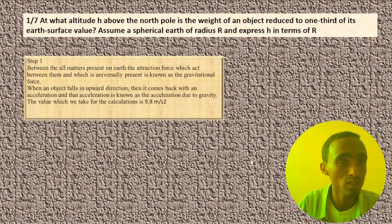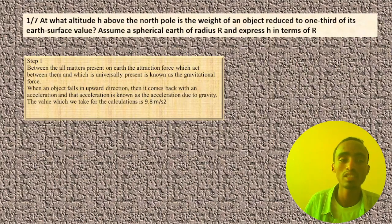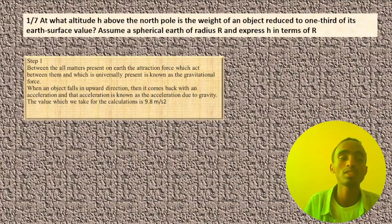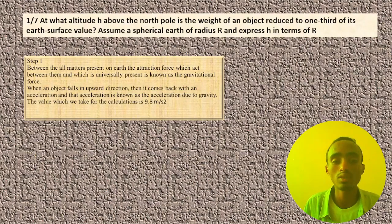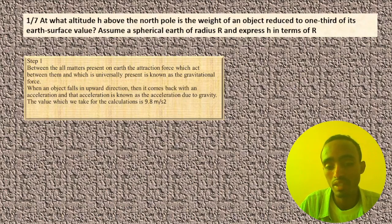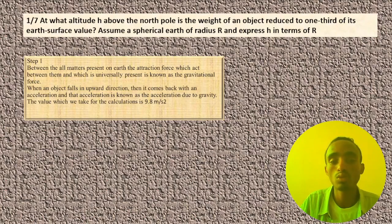Before starting this question, between all matter present on the surface, there is a force of attraction which acts between them and which is universally present, known as force of gravitation. When objects fall in the downward direction, they accelerate, and this acceleration is known as acceleration due to gravity, which has a value of 9.81 meters per second squared or 9.81 newtons per kilogram or 32.2 feet per second squared.